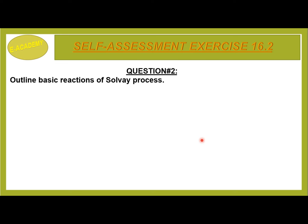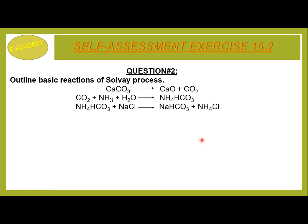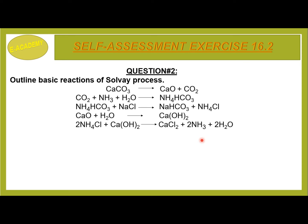Question No. 2: Outline basic reactions of the Solvay process. Reaction 1: calcium carbonate converts into calcium oxide plus carbon dioxide. Reaction 2: carbon dioxide plus NH3 plus water react to form NH4HCO3. Reaction 3: NH4HCO3 reacts with NaCl to give NaHCO3 plus NH4Cl. Reaction 4: calcium oxide plus water gives calcium hydroxide. Reaction 5: NH4Cl reacts with calcium hydroxide to give calcium chloride plus NH3 plus water. Reaction 6: NaHCO3 on heating gives Na2CO3 plus water plus carbon dioxide.